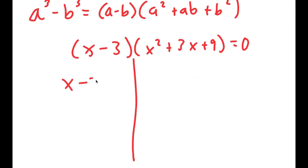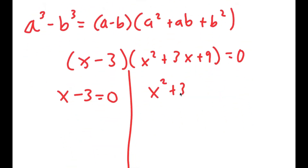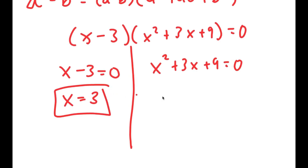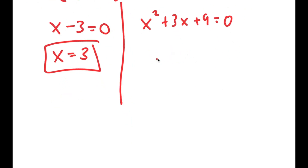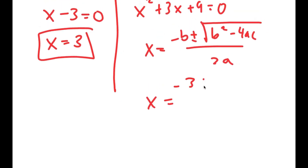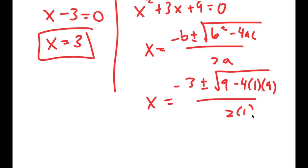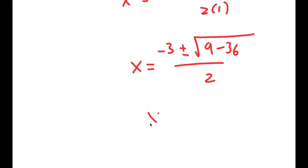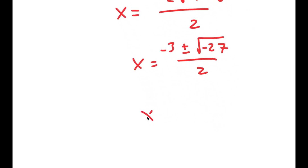This gives two equations: x minus 3 equals 0 and x squared plus 3x plus 9 equals 0. For x minus 3 equals 0, x equals 3. For x squared plus 3x plus 9 equals 0, I use the quadratic formula: negative b plus or minus the square root of b squared minus 4ac all over 2a. This gives negative 3 plus or minus the square root of 9 minus 36 over 2, which equals negative 3 plus or minus the square root of negative 27 over 2.